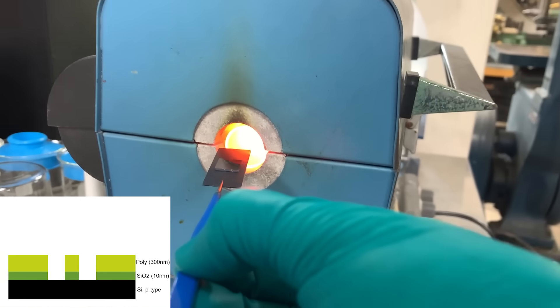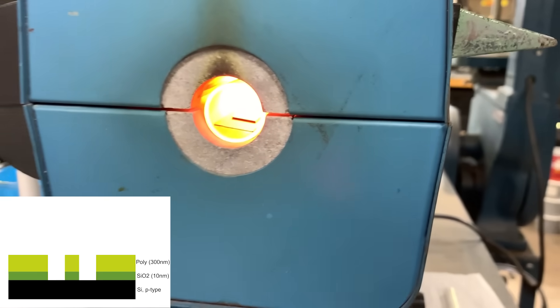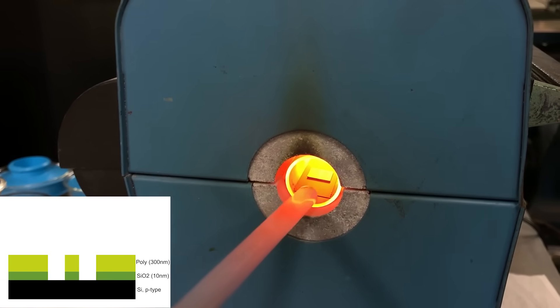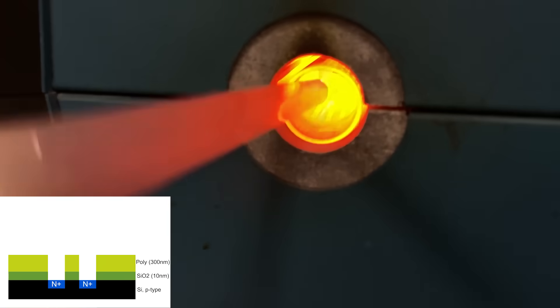for about 45 minutes. This drives in the phosphorous atoms into the little wells that we just defined using lithography, and that basically forms the source and drains of the MOSFETs. I have to push it into the center of the furnace using this quartz rod, and then at the end of the process we pull it out the other side.